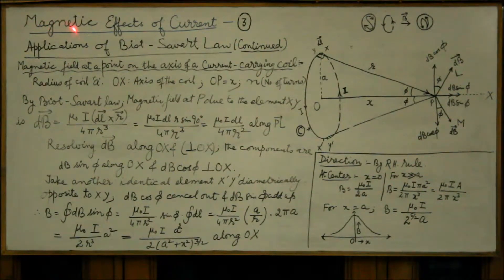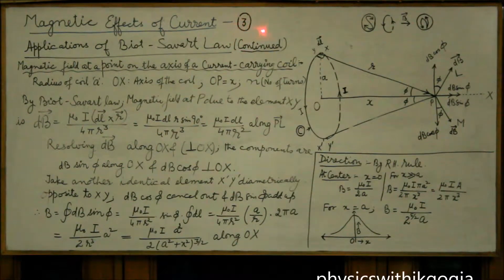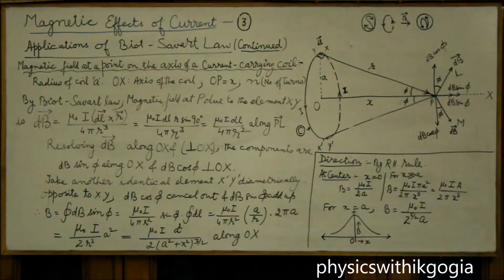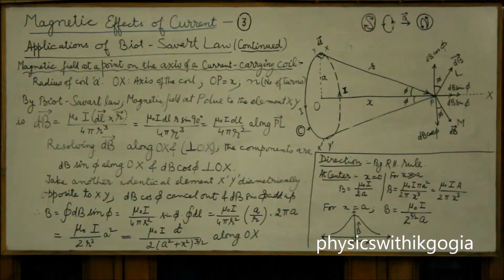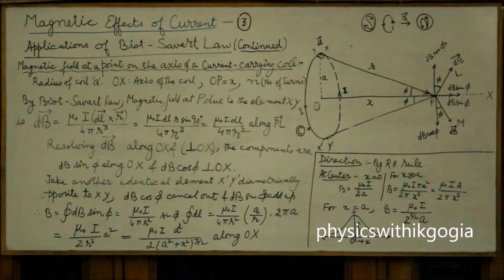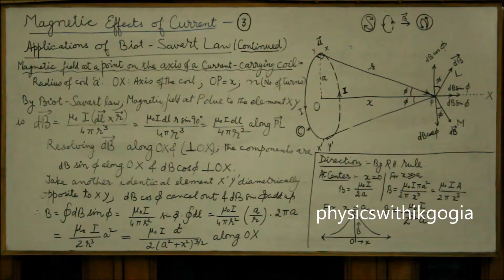In the previous videos on magnetic effect of current, that is part 1 and part 2, we have studied how Oersted discovered the magnetic effect of current and how do we get the direction of the magnetic field using Ampere's right hand grip rule.